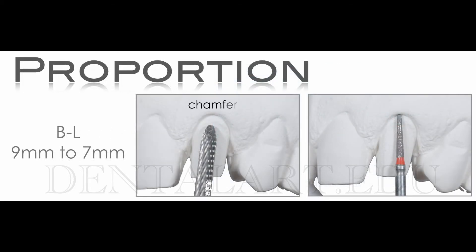After our preparation, since the canine is very bulky in its cervical-facial configuration, we need a flat configuration there. We need a flat emergence profile, so what we need is a bevel. From the chamfer, we go to a bevel — this bevel doesn't have to be covered by ceramic; it has to be free. We have to stay in the enamel. It's a very light bevel to achieve a flat emergence profile.